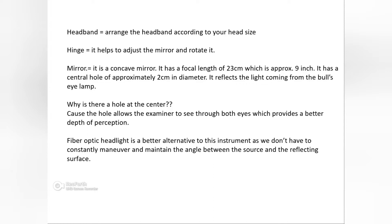The mirror is a concave mirror, which means it converges the light. It has a focal length of 23 centimeters, meaning the mirror best focuses at a distance of 22 to 25 centimeters — approximately 9 inches. It has a central hole of approximately 2 centimeters in diameter, and it reflects light coming from the bull's eye lamp.